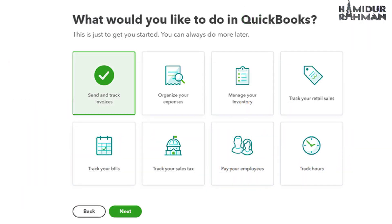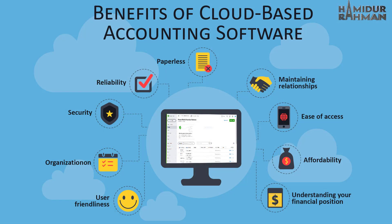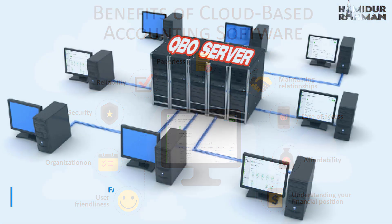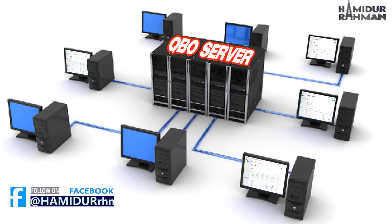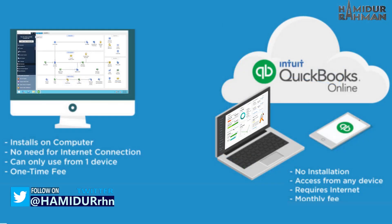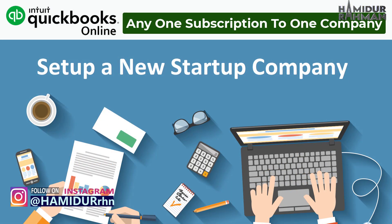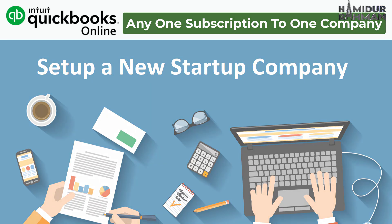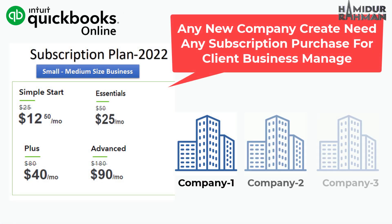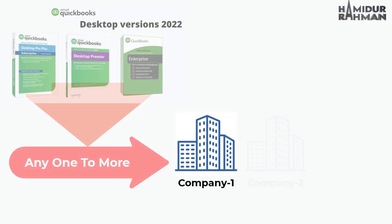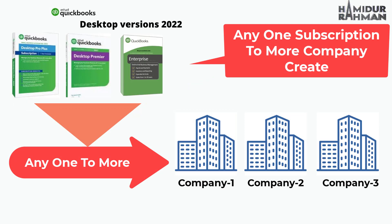QuickBooks Online is great for business management, as it allows access to business data from anywhere and enables real-time collaboration, as well as moving financial data online to take advantage of automatic data backup. Online and desktop are two different platforms. In QuickBooks Online, only one company file is allowed per subscription. For a second or additional company, you need to sign up for a new QuickBooks account with another email. With QuickBooks Desktop, it is possible to create more than one separate company file using a single license purchase.